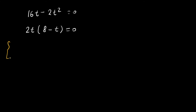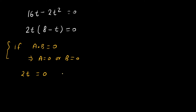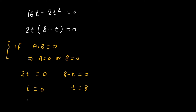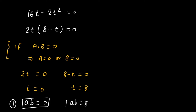Now if we take out the common factor 2t, we get 2t(8 − t) = 0. Since the product of two expressions equals zero, either one must be zero: so 2t = 0 giving t = 0, or 8 − t = 0 giving t = 8. Since t = ab, we have ab = 0 or ab = 8. Let us consider these as case one and case two.